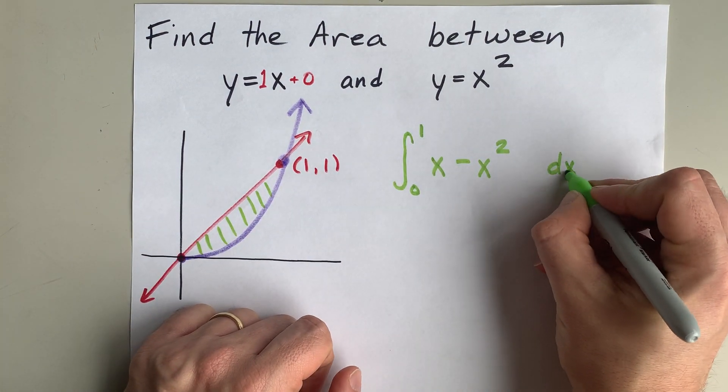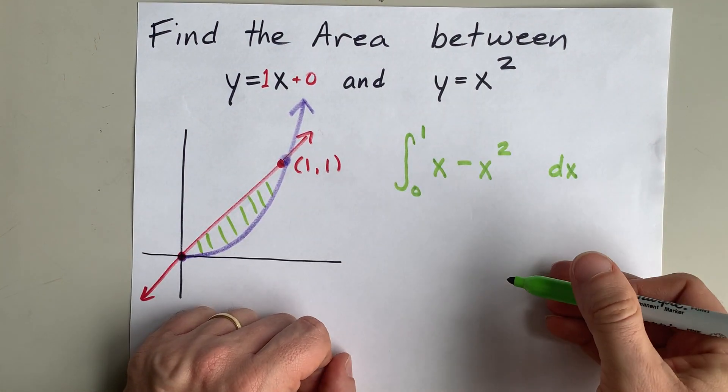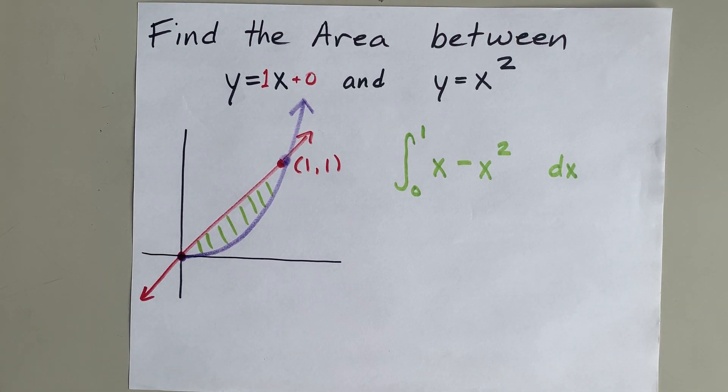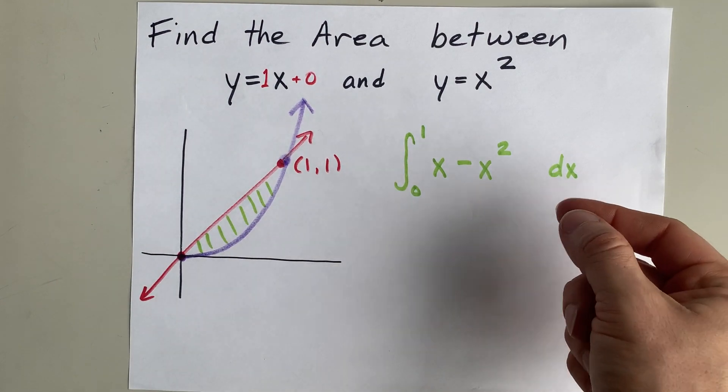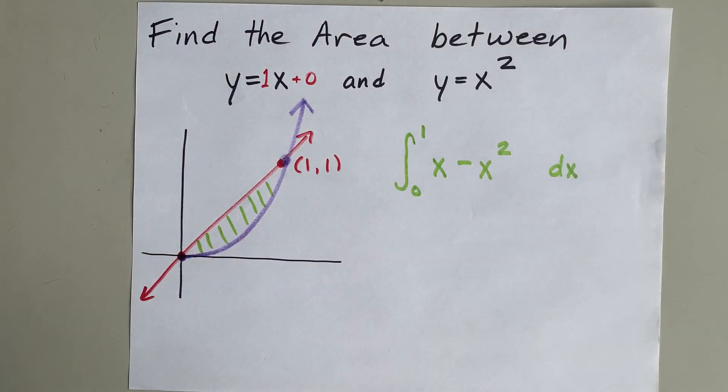Write your dx there so that everyone knows that's the variable across which you're integrating. This is the definite integral that, when you evaluate it, will give you the area between those curves.